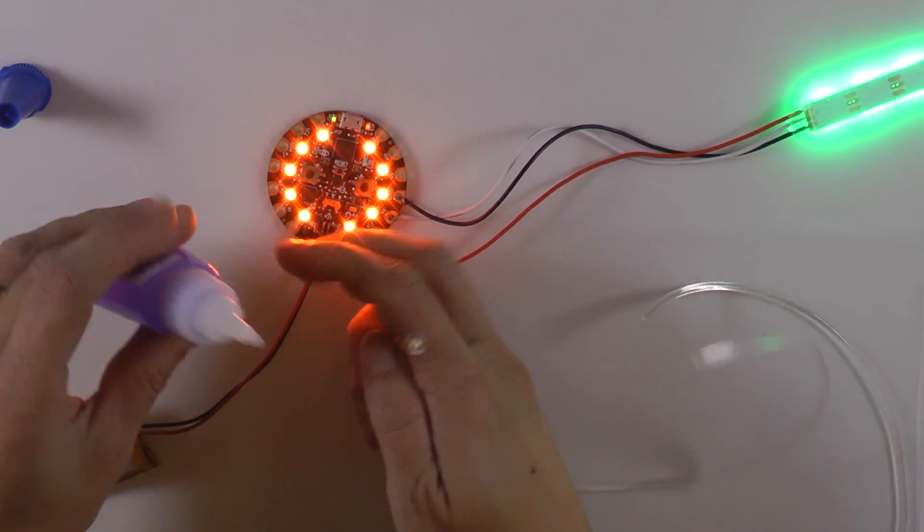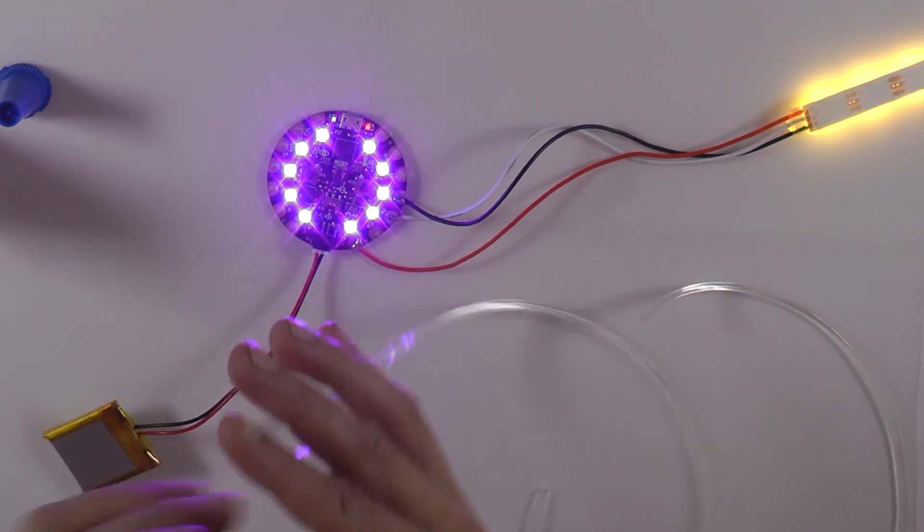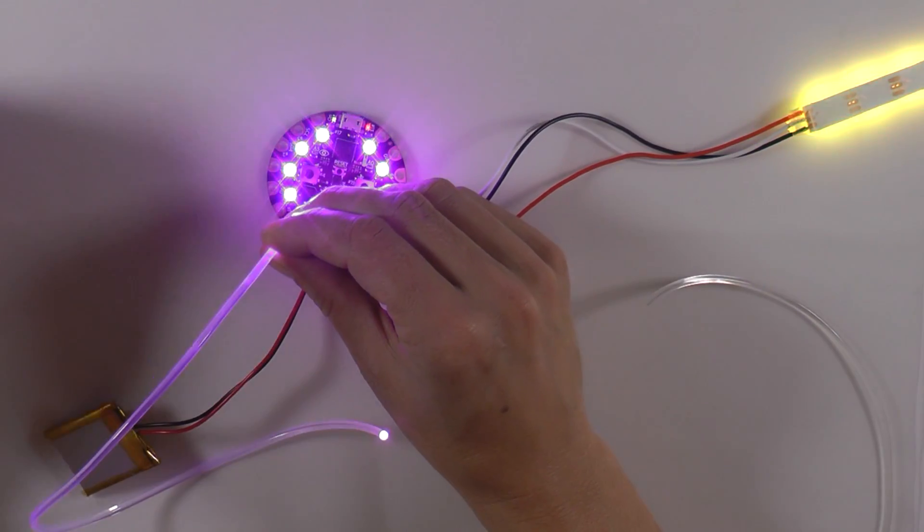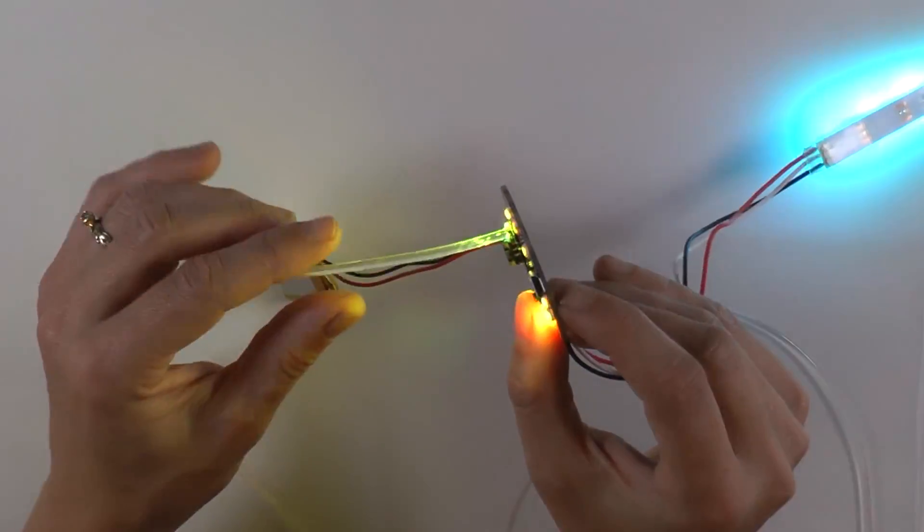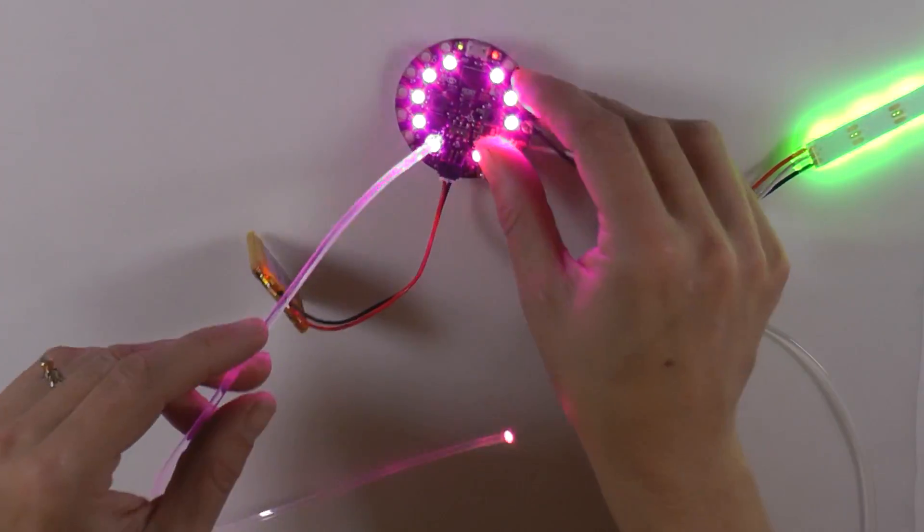Pull it off and add some super glue to the bottom of the light pipe. Line it back up with the LED and hold it in place until the glue dries. Give it a gentle tug to make sure it's attached tightly.